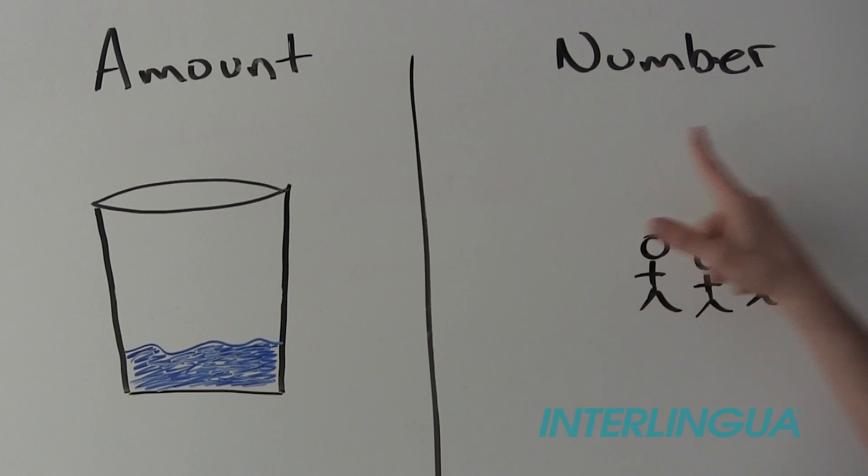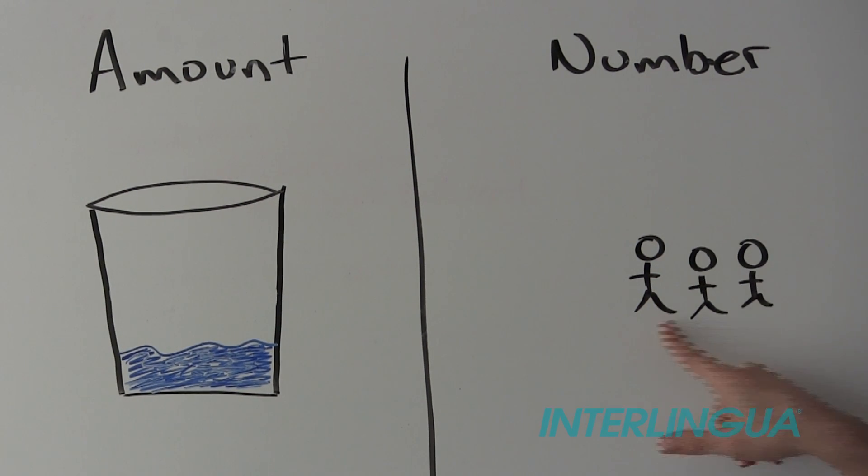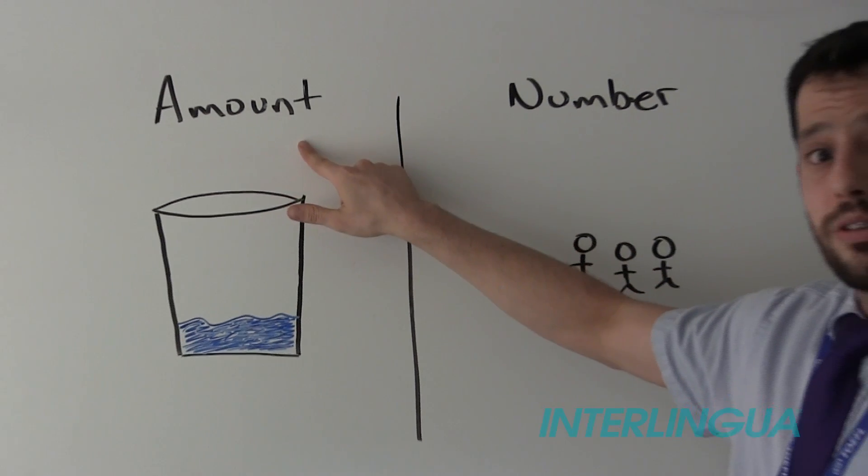So, there you have it. We use number when we can count, and amount when we can't count.